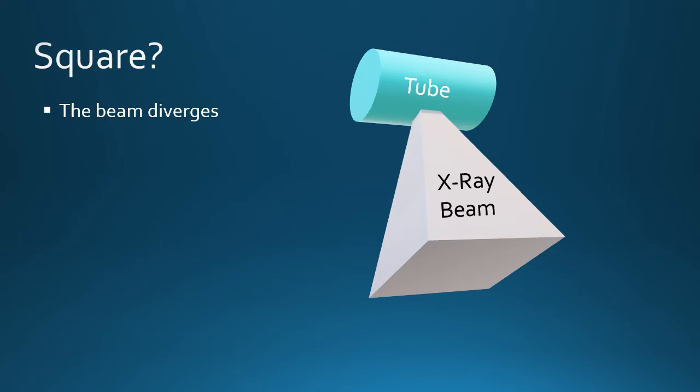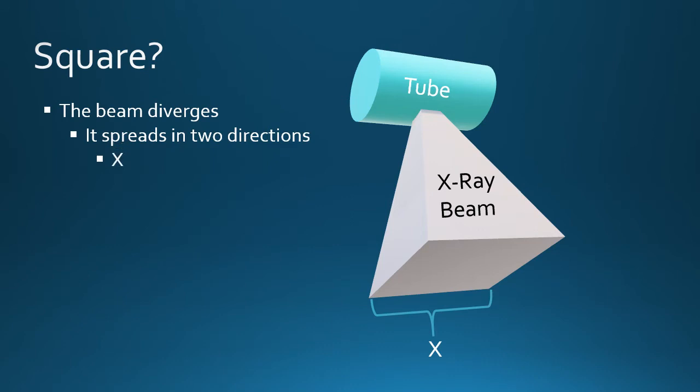We see the beam emitted from below. From this perspective it is evident that the beam diverges in two dimensions: it becomes wider in the x-dimension and also becomes longer in the y-dimension. The square accounts for the second dimension of spread.